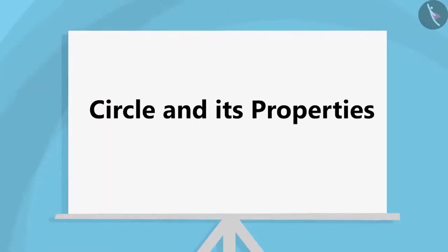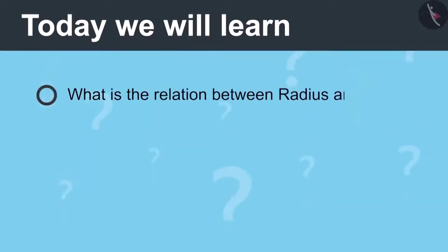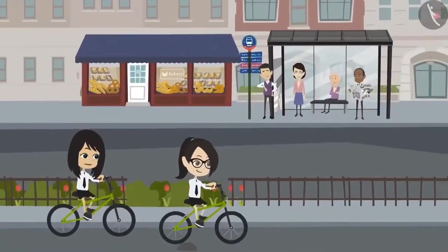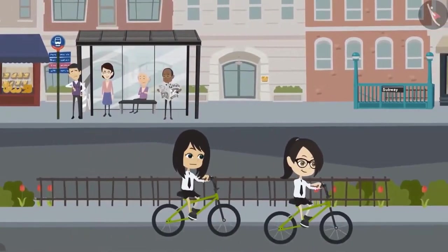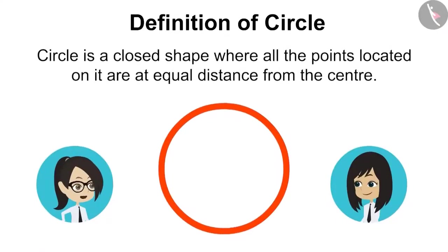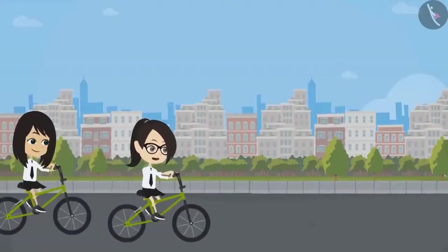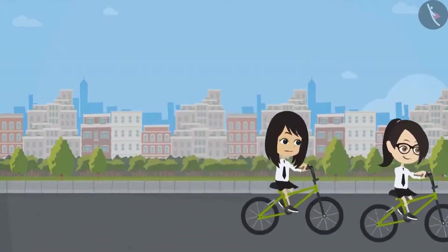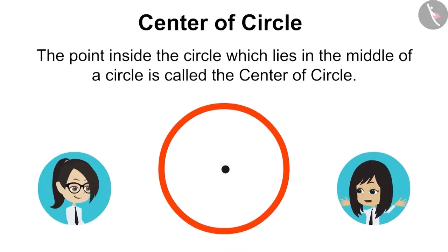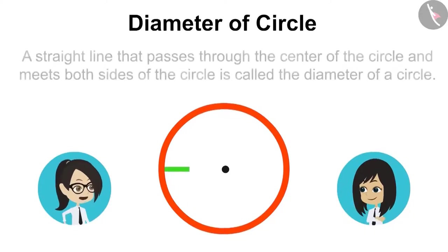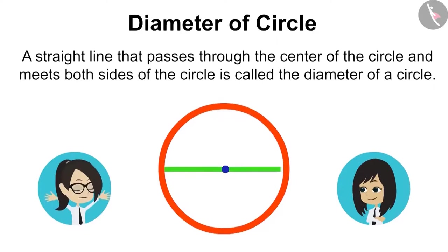Circle and its properties, Part 2. Today we will learn what is the relation between the radius and circle. Remember what Sir told us about circle yesterday? Circle is a closed shape where all the points located on it are at an equal distance from the center. The center of the circle is the point inside the circle which lies in the middle. A straight line that passes through the center of the circle and meets both sides of the circle is called the diameter of the circle.